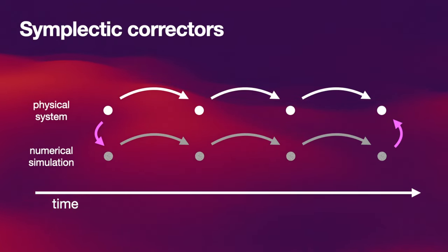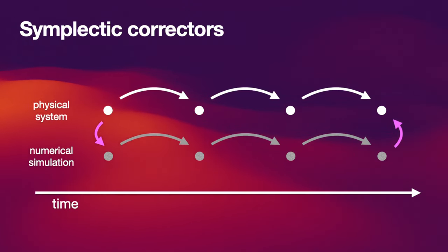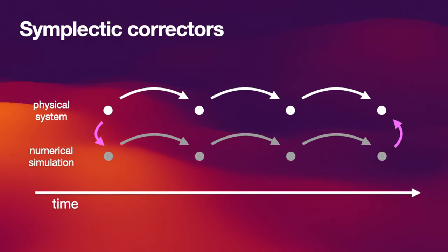Using a warm-up method, what you do is you slowly increase the time step from a very small number to that constant number that you want to use later on. By slowly changing the time step, making it bigger and bigger, you effectively do something very similar to what the symplectic correctors do. The symplectic correctors do that in one step.